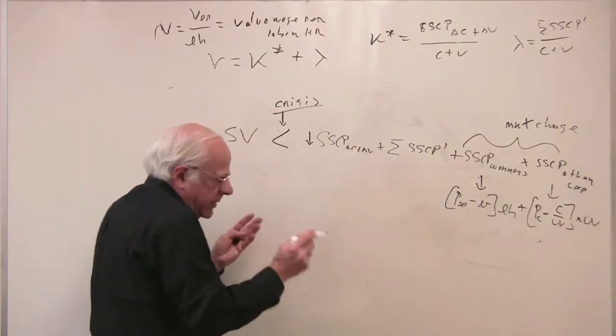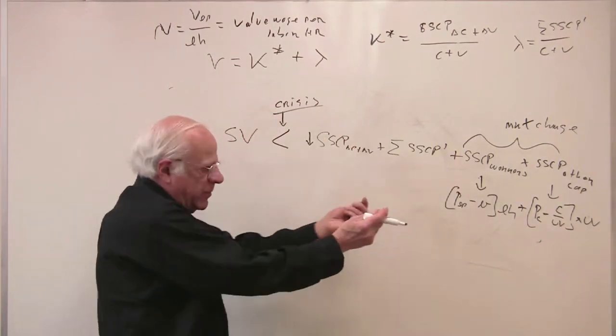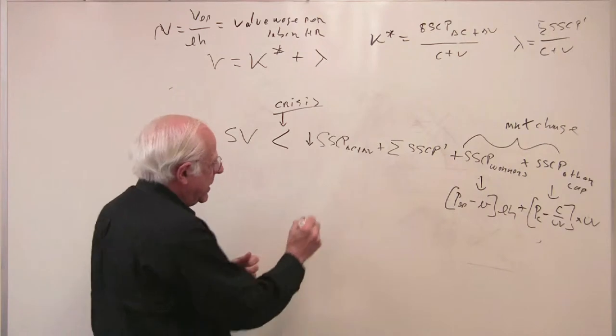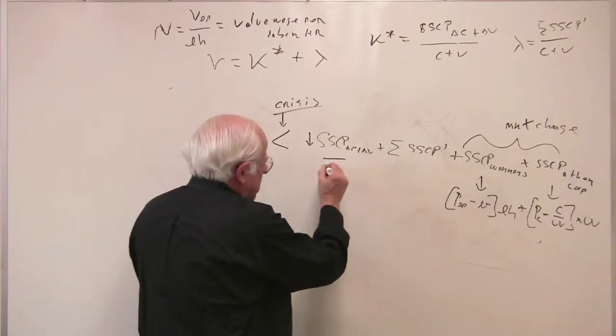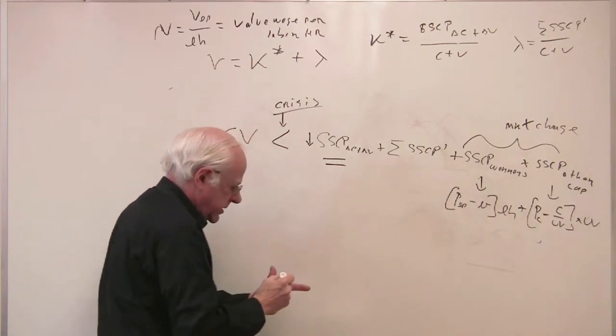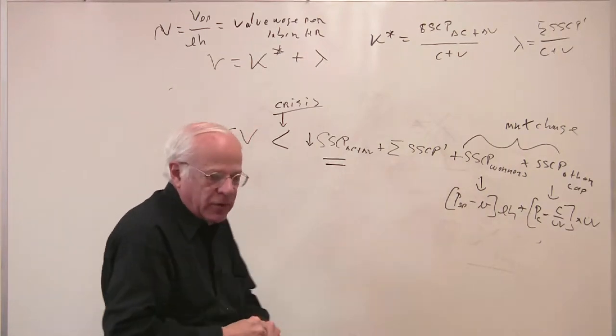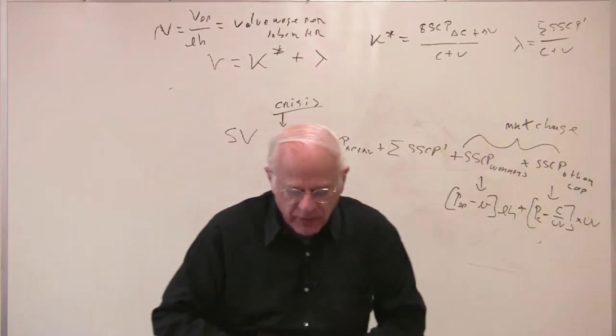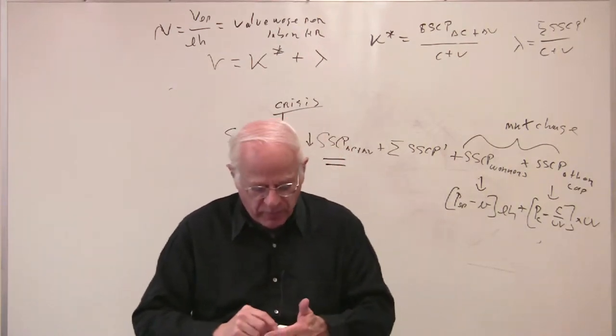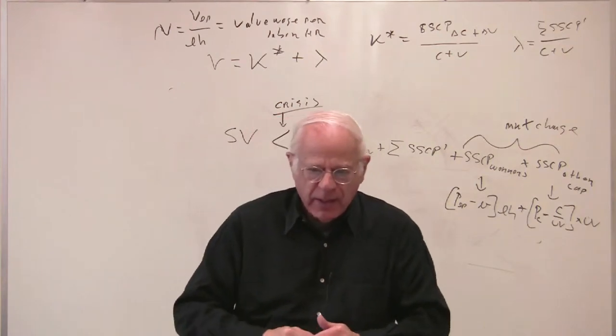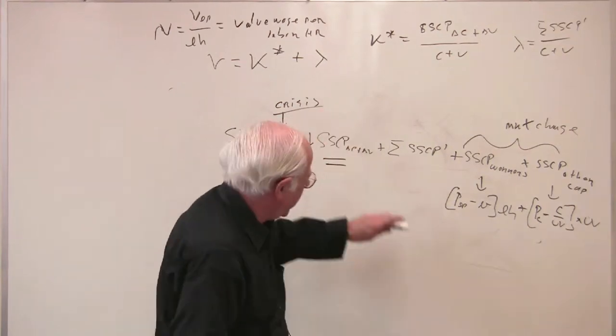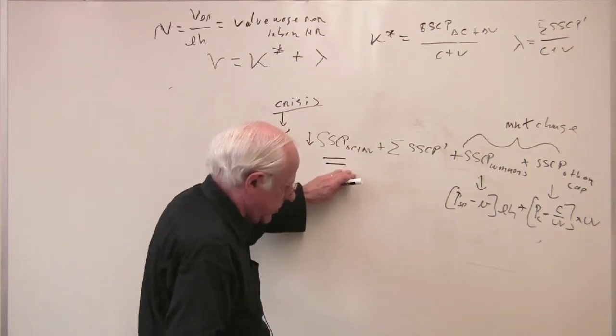Marx argues there is going to be a cutback, and the cutback he focuses upon is capital accumulation. Following the logic of Volume 1, we can focus upon this and go back to our markets.